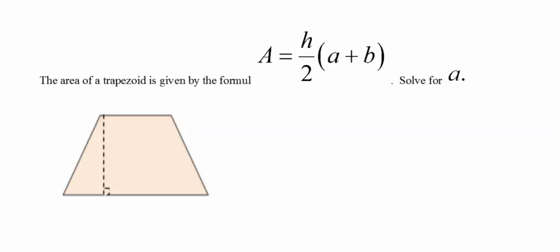Next one, the area of the trapezoid is given by the formula A equals H over 2 times A plus B. Solve for the letter A. So with this one, I don't like that 2 in the denominator. So I'm going to just go ahead and multiply both sides by 2. And by multiplying by 2, it clears out that fraction.